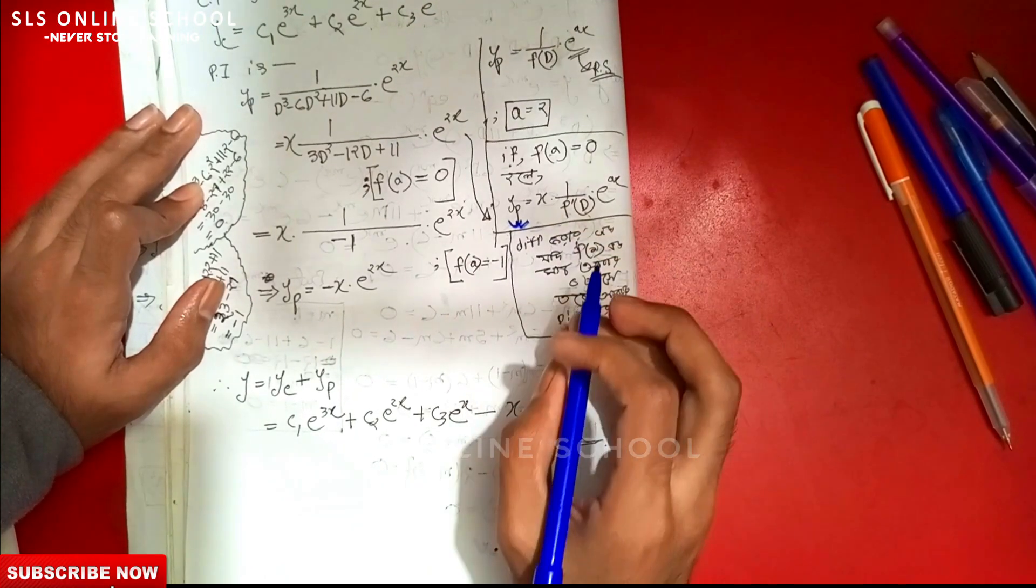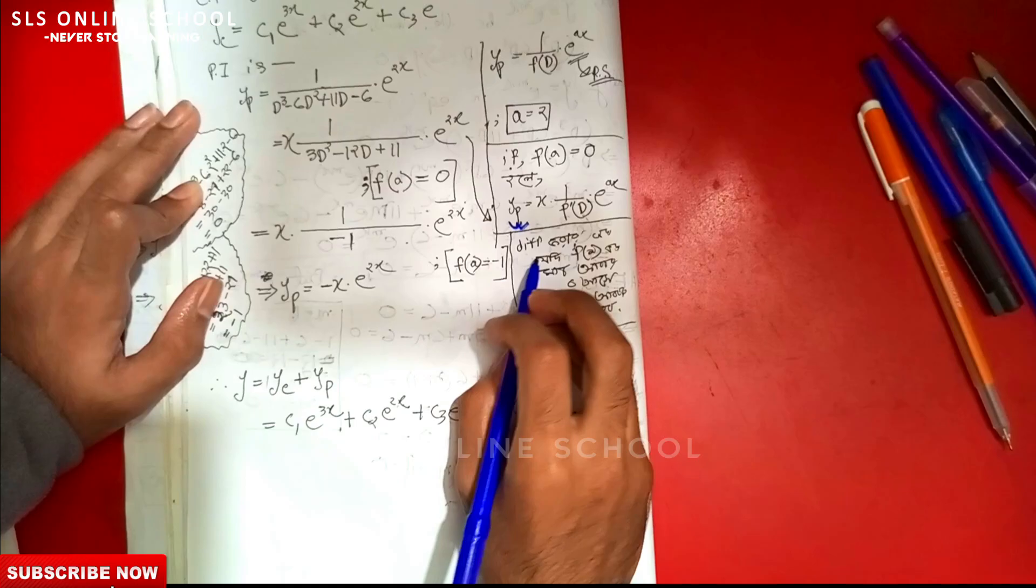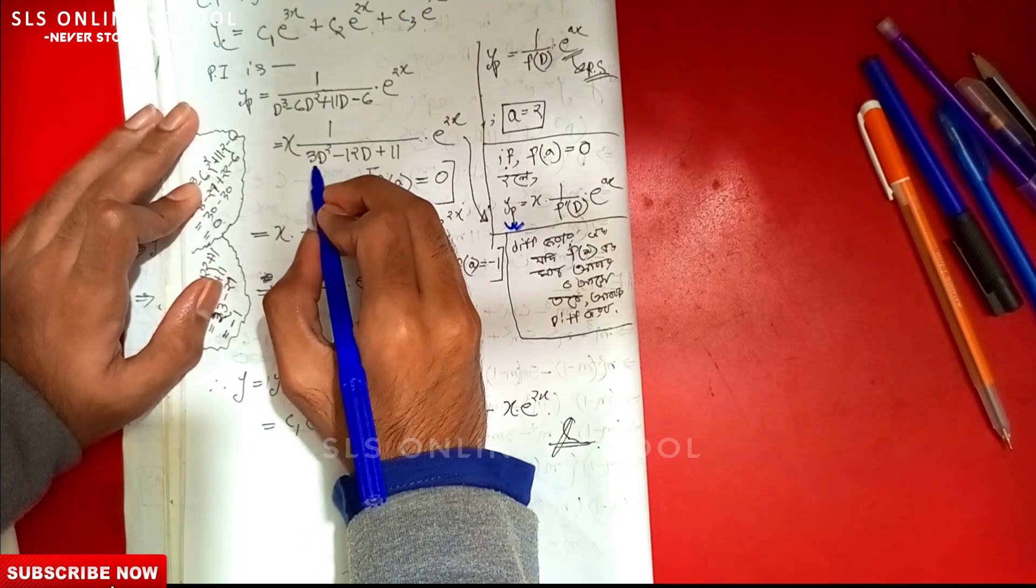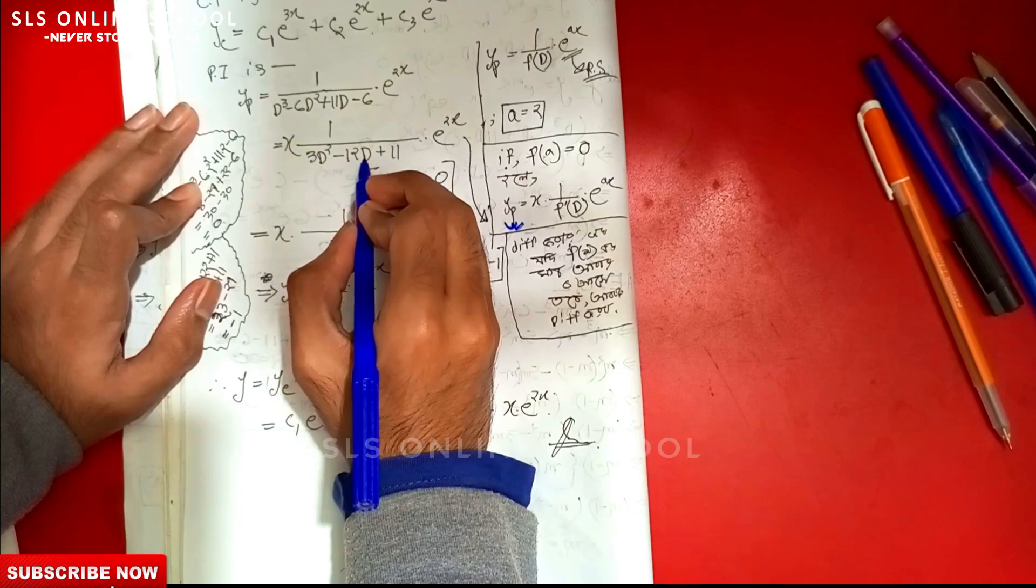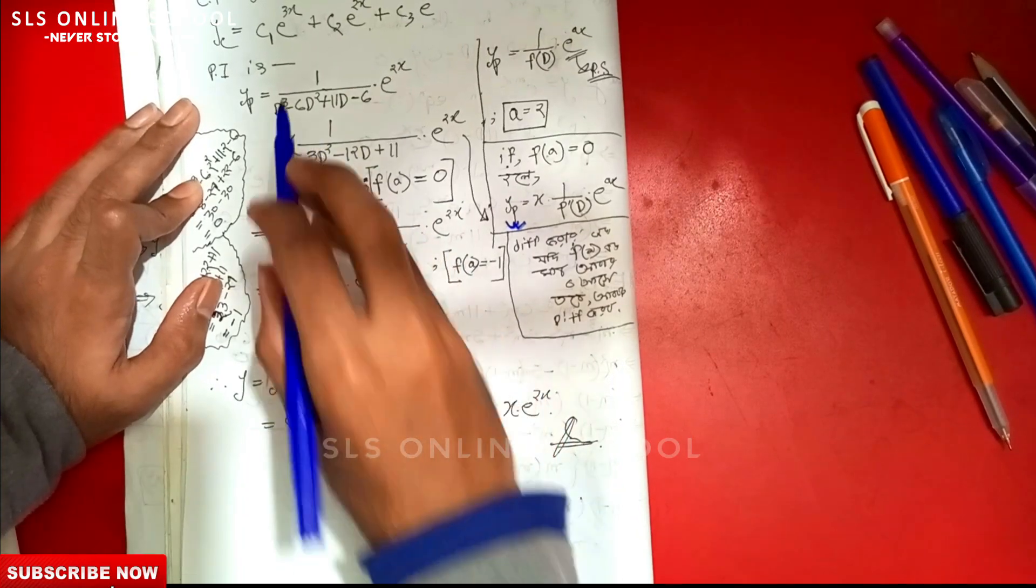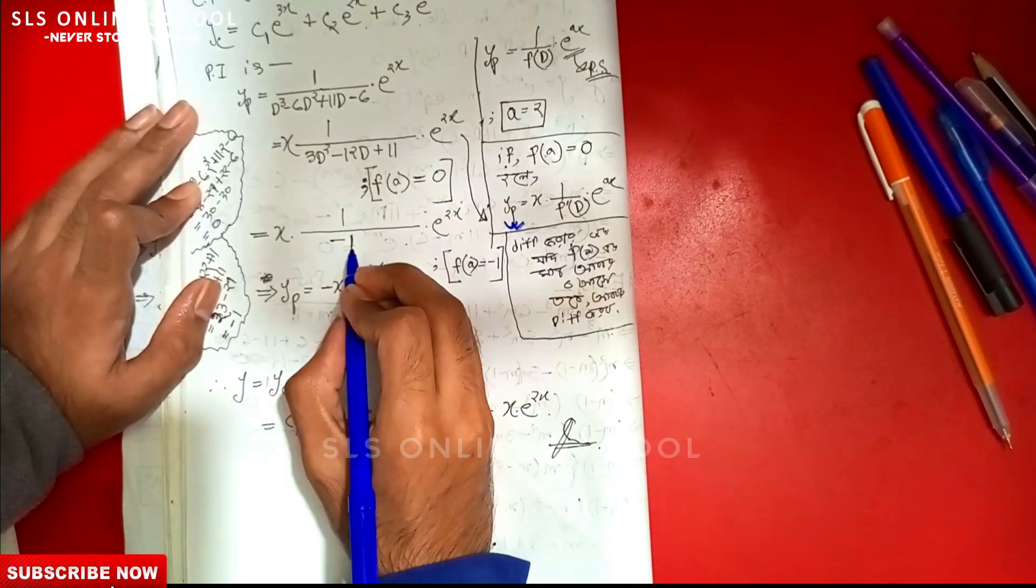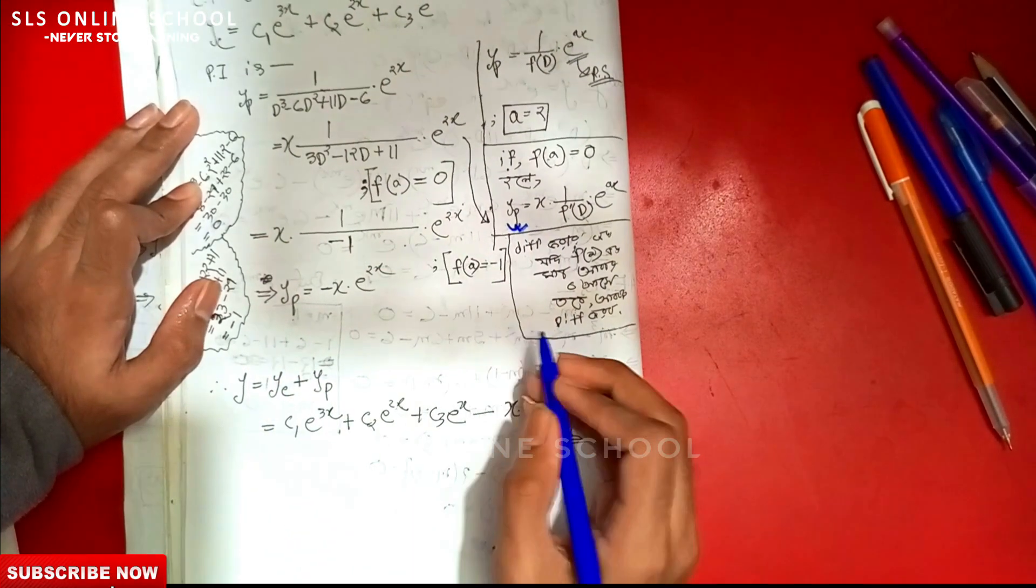We apply the formula: x times 1/(d² - 12d) as usual. Then x into 1/(-1) · e^(2x).